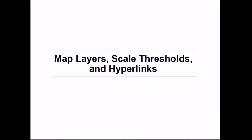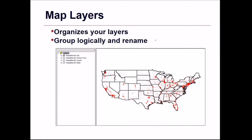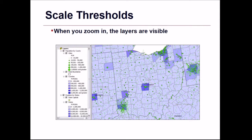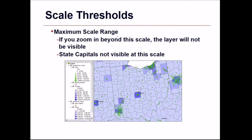Coming to map layers, scale thresholds, and hyperlinks: map layers organize your layers, and you can group them logically and rename them as required. The scale threshold's minimum scale range means that if you zoom out beyond this scale, the layer will not be visible — this is important so the map does not look crowded. For a particular scale one layer is shown, and for a different scale another is shown. The maximum scale range means if you zoom in beyond that scale the layer will also not be visible — for example, state capitals are not visible at a very zoomed-out scale.